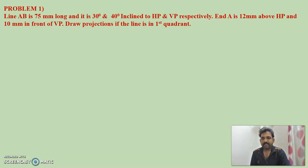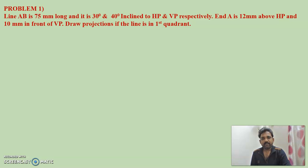Let's take the first example. Line AB is 75 millimeters long and it is 30 degrees and 40 degrees inclined to HP and VP respectively. End A is 12 millimeters above HP and 10 millimeters in front of VP. Draw projections if the line is in the first quadrant. To solve any problem on position of lines we require at least five data, and it is very necessary that you interpret the data properly.